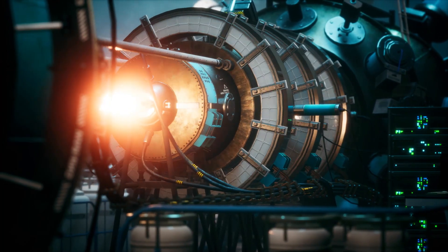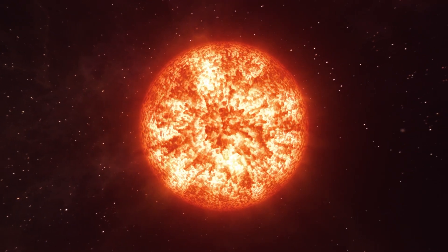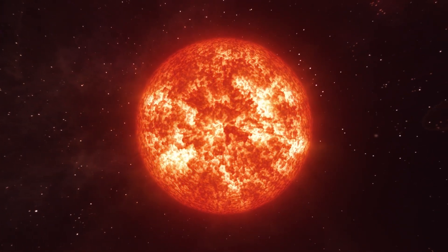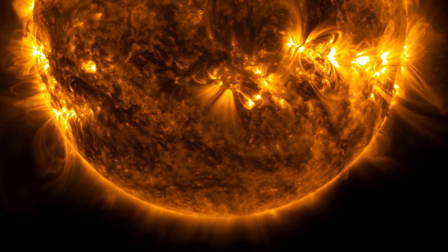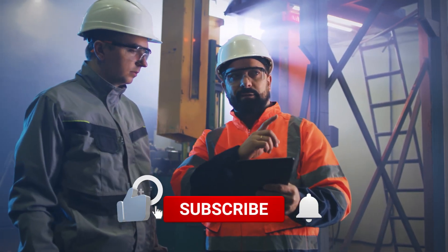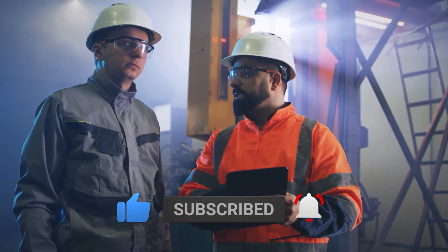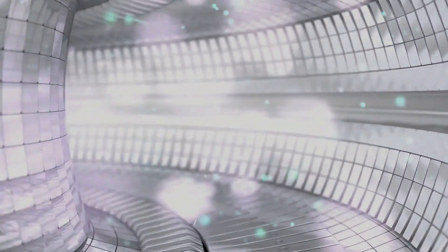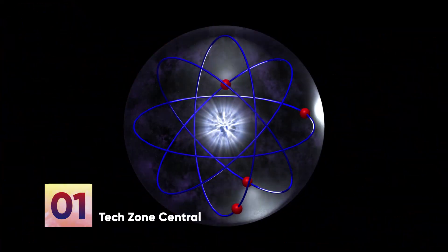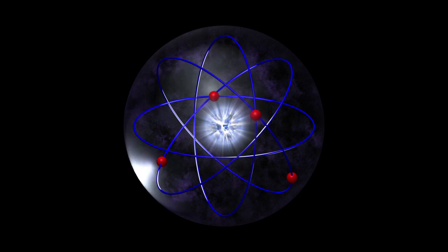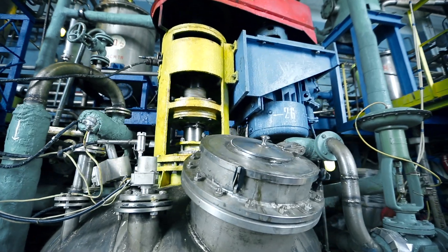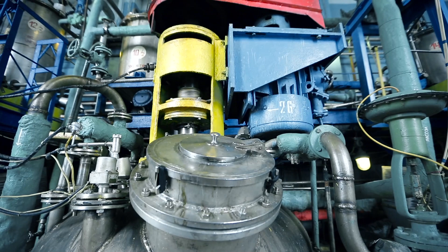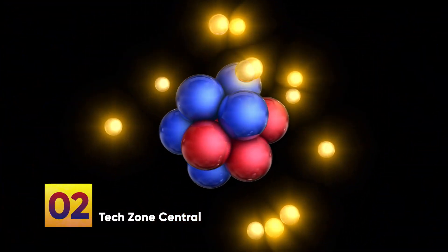Therefore, scientists came up with the concept of utilizing nuclear fusion, which is one of the processes most frequently observed in stars. This is normally how stars acquire their fuel, and the procedure is relatively straightforward — at least for a large gaseous body like a star. In nuclear fusion, the relative compositions of two different elements are brought together and reformed in a nuclear reaction involving deuterium and tritium. The two elements combine to generate an atom of helium and a neutron.